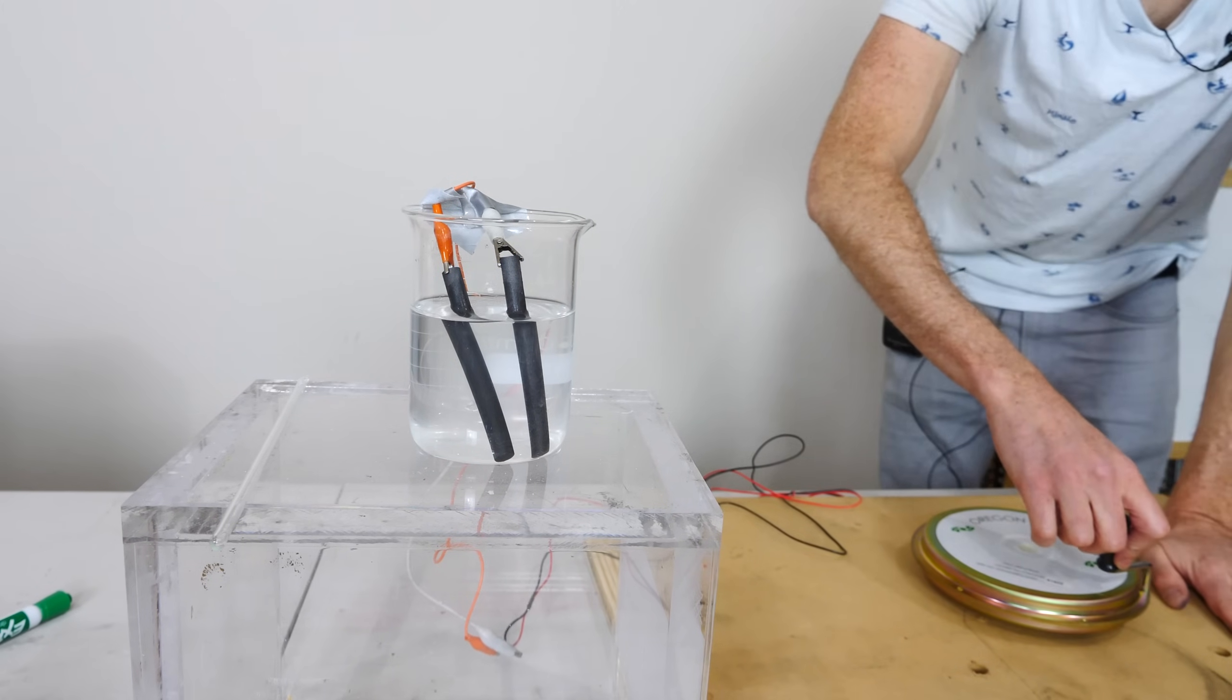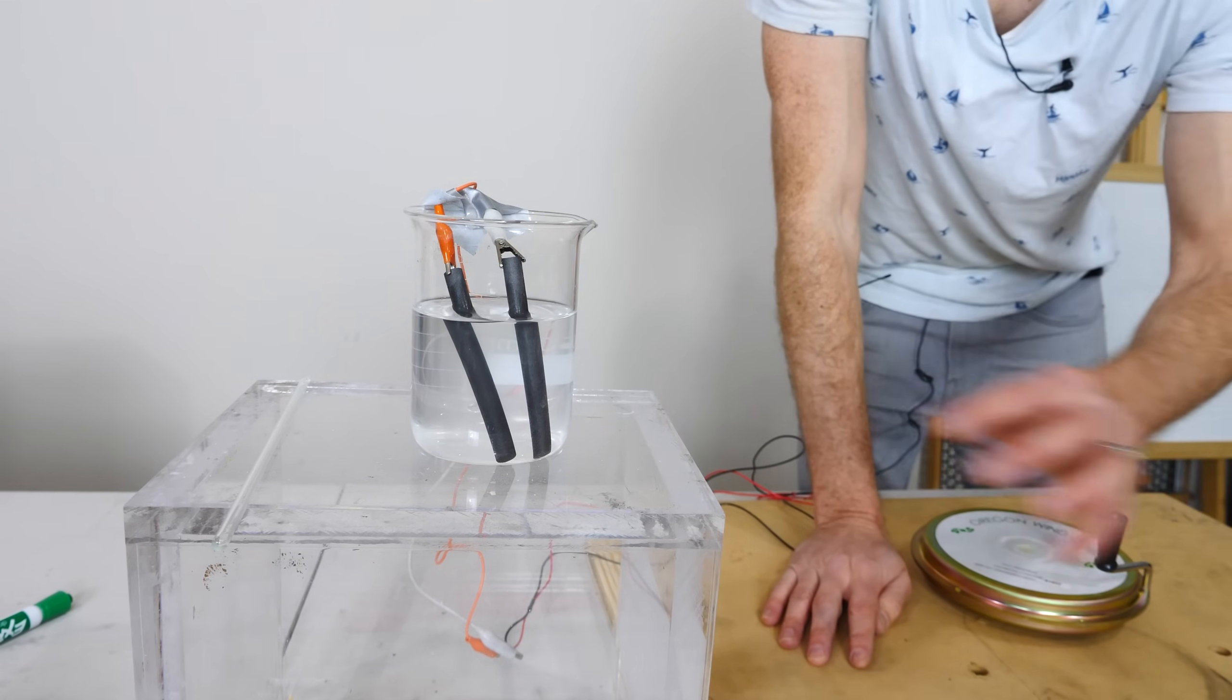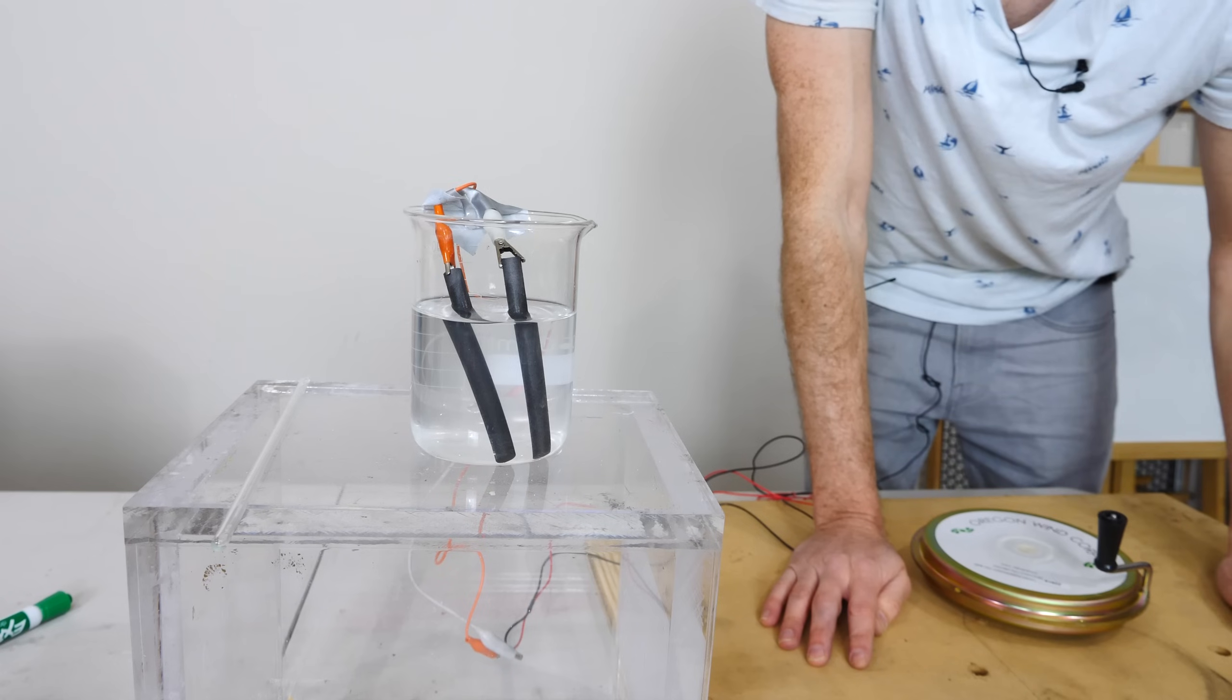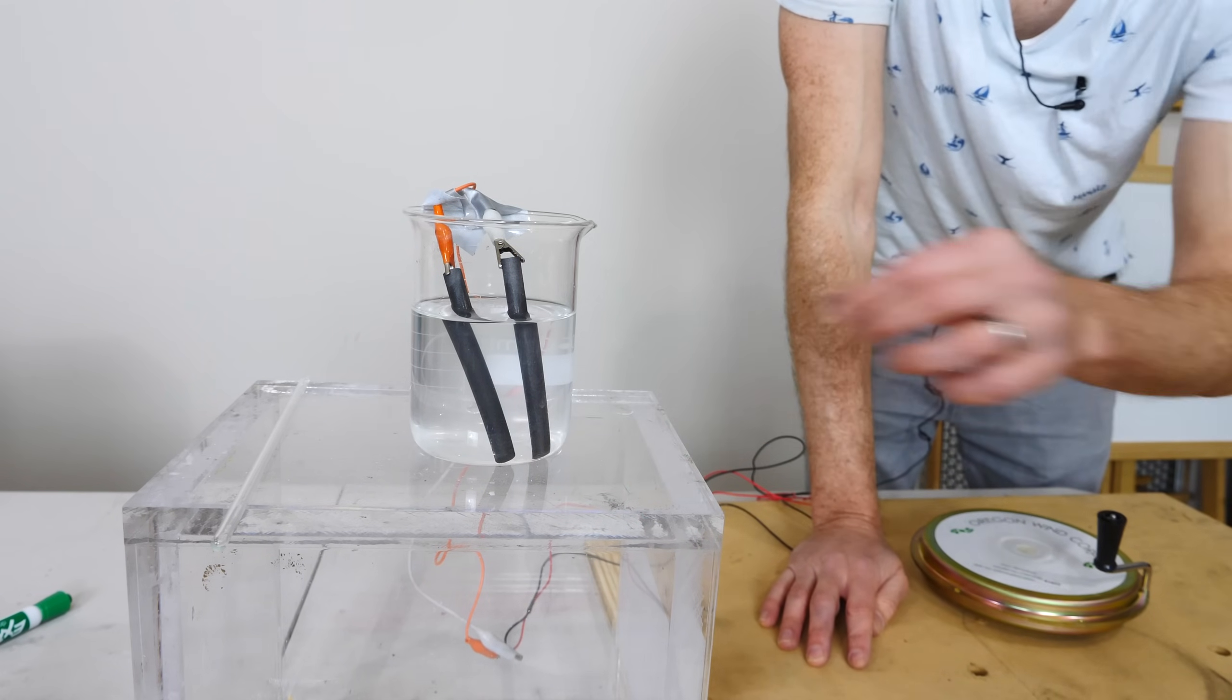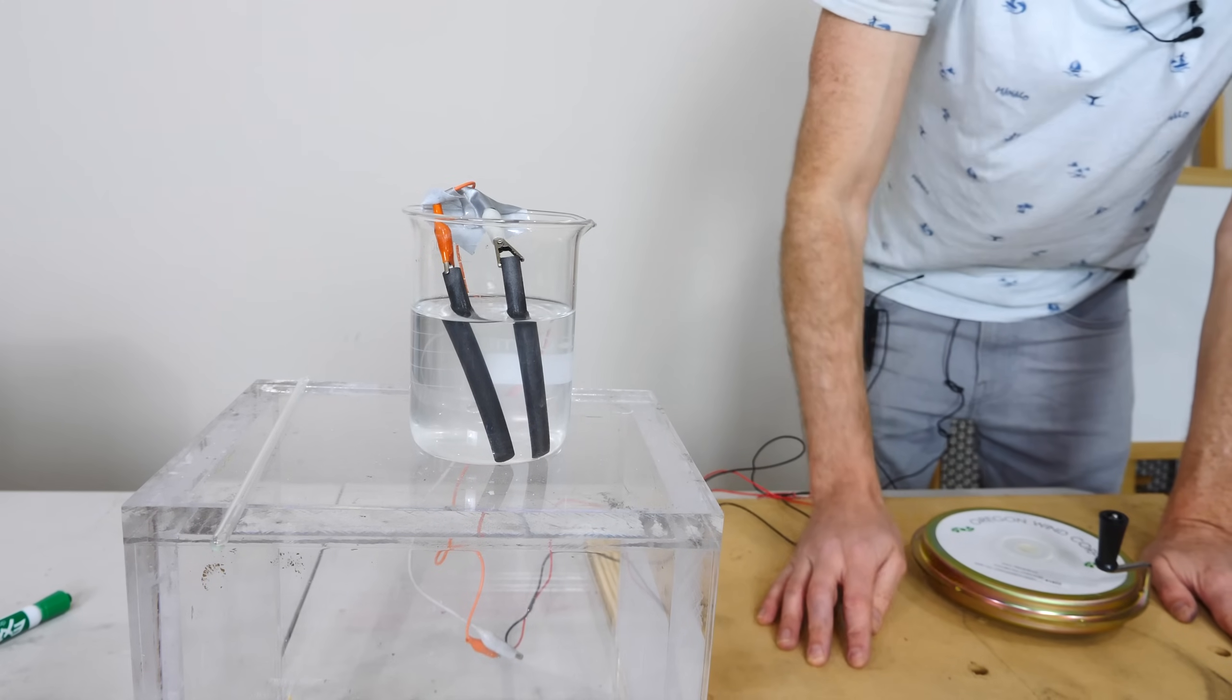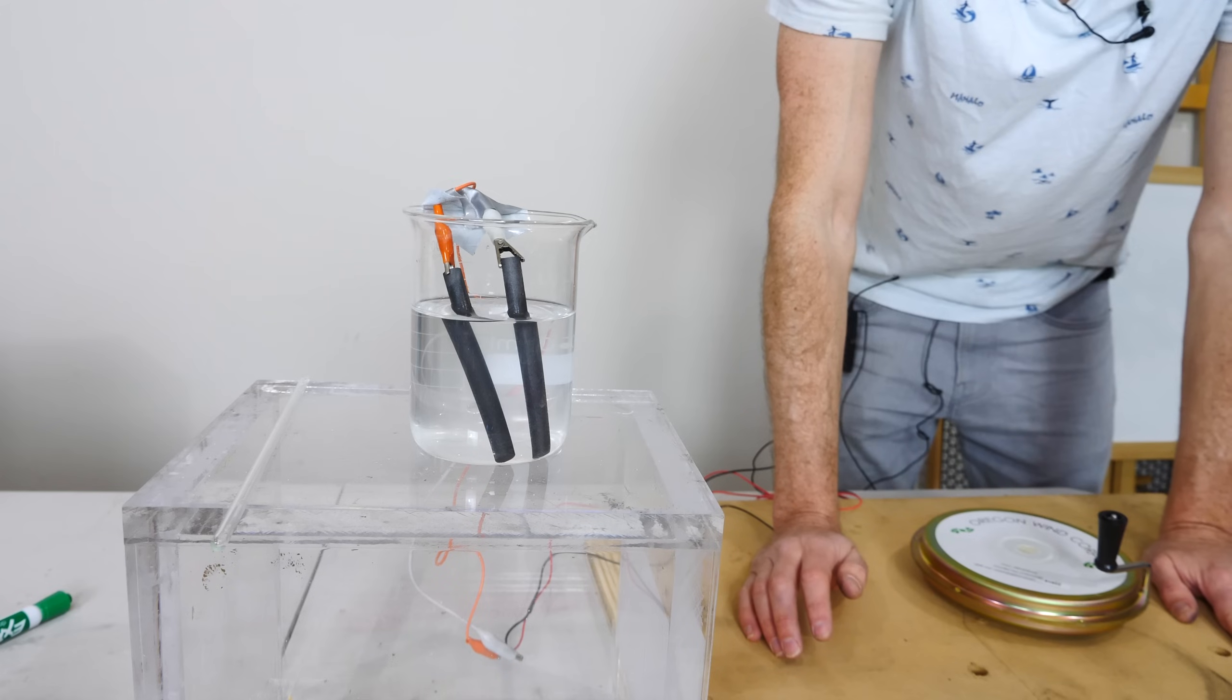So as soon as I start cranking this, it should start to generate bubbles on both of these electrodes. Now the electrode that has hydrogen coming off of it, you should see about double the amount of gas than the one that has oxygen coming off of it. Because remember there's two molecules of hydrogen created for every molecule of oxygen created.